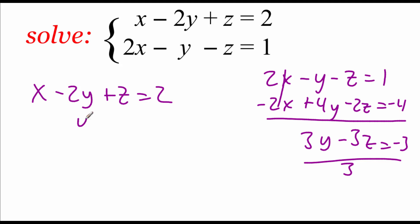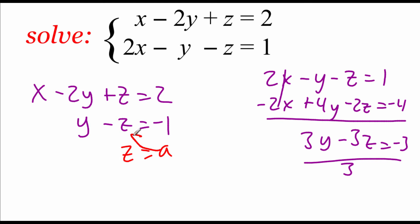So then we get the equation y minus z equals negative 1. Now normally we would have a third equation which would help us figure out what our z value is. But since we don't have any restrictions on our z value, z can be any number. So we're going to use the z equals a approach. Then we'll do our back substitution — we'll plug that a value in. So we get y minus a equals negative 1, giving us y equals a minus 1.